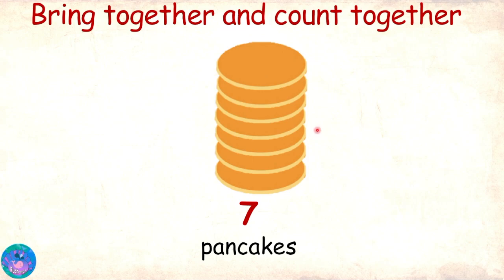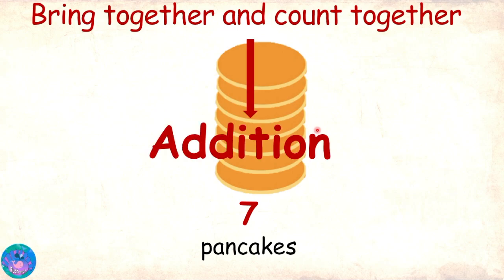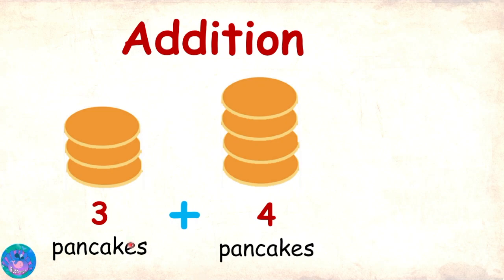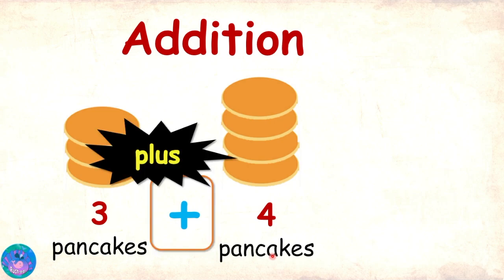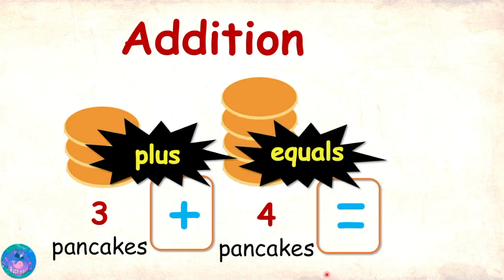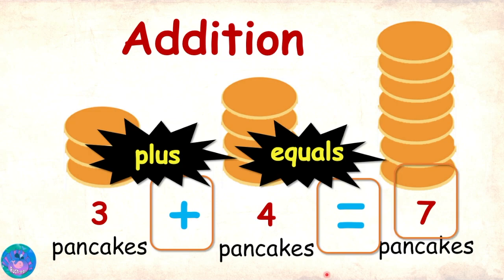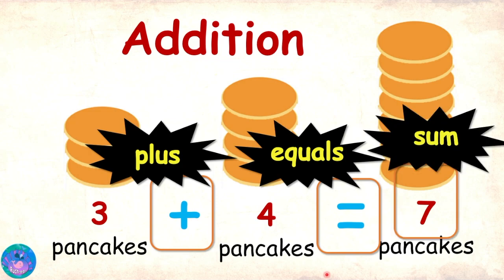That's right. And children, do you know, when we bring together and count together different numbers of objects, we call that addition. So that is what addition means. Yes, and in math, addition of numbers can be represented using symbols. To show addition of three pancakes and four pancakes, we can use this symbol, which we call plus. And after that, we place this symbol, which we call equals or equal to, after which we write the answer.